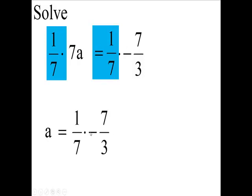1/7 times negative 7/3. So we have our numerators and my denominators. Multiply them. Then we can cancel these 7s, can't we?